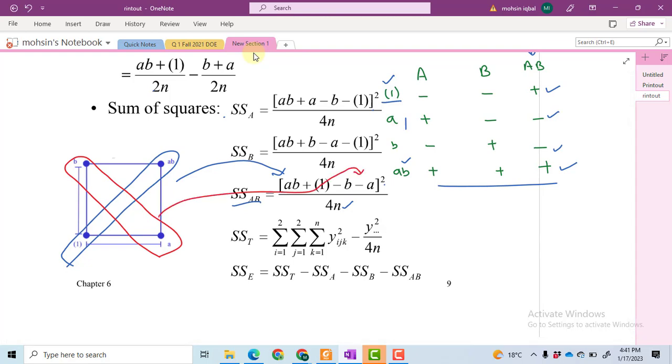Okay, so these are the three formulas for the calculation of sum of squares of A, sum of squares of B, and sum of squares of AB.